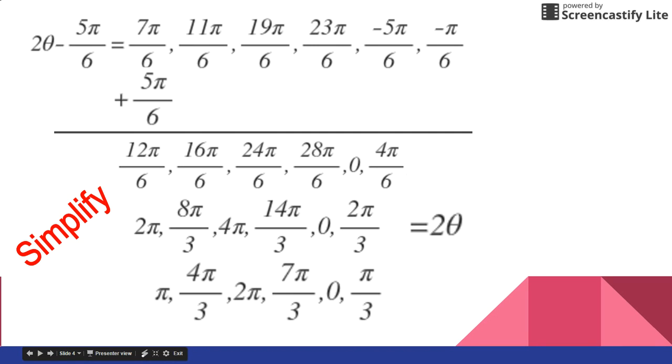But notice 2π is larger, it's outside of our domain. Our domain is 0 to not including 2π, and 7π thirds is also outside of 2π. So we're going to get rid of those two. And so our four answers are π, 4π thirds, 0, and π over 3.